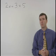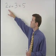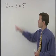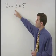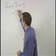Our first step will be to isolate the term containing x, which in this case is 2x. To isolate 2x we have to get rid of this plus 3 by subtracting 3 from both sides of the equation.